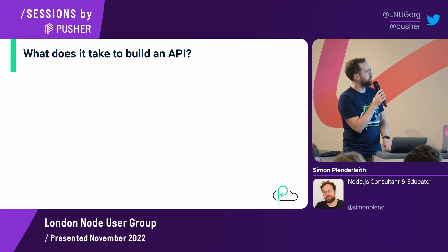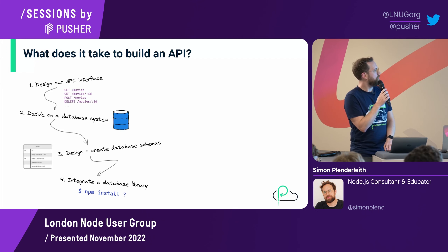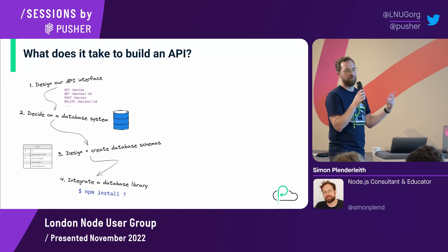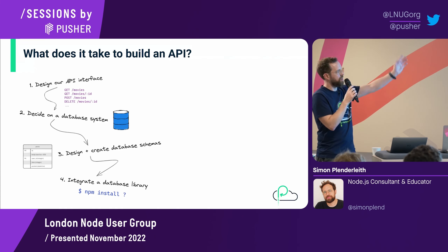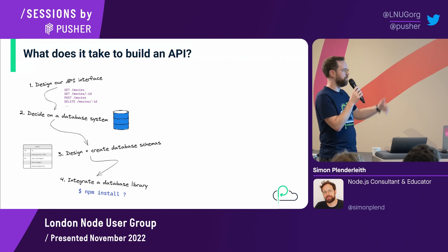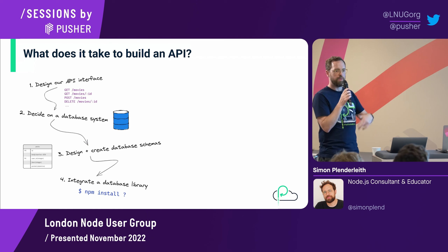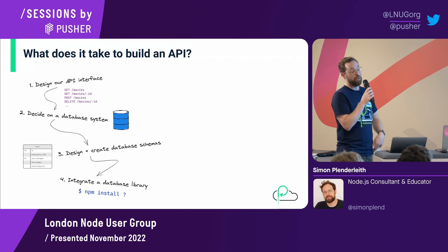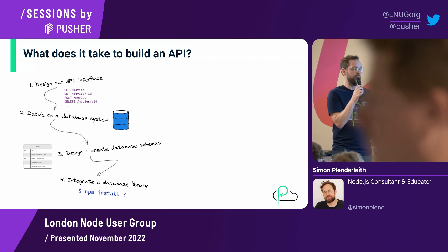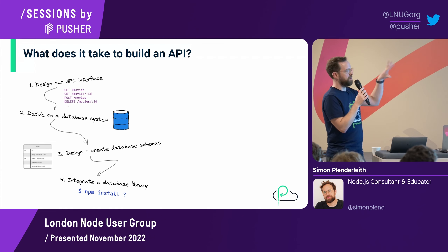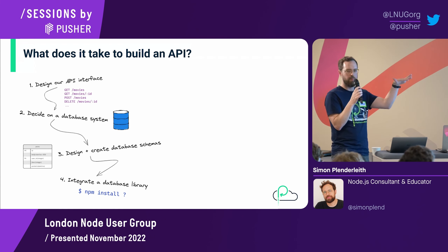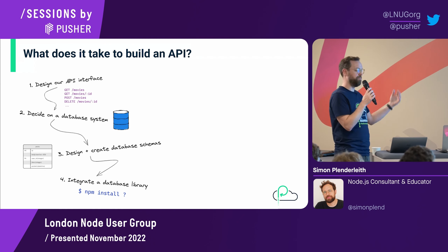So what does it take to build an API? Typically we're going to want to design our API interface. Here we've got examples of some REST routes — get movies, get movies by ID, post, delete, and so on — all the RESTful stuff you'd expect. Or we might be building a GraphQL API, so we'll need to design our mutations and queries. We really need to think about this kind of stuff up front because it can become difficult to change later, especially once we've got people consuming our API.